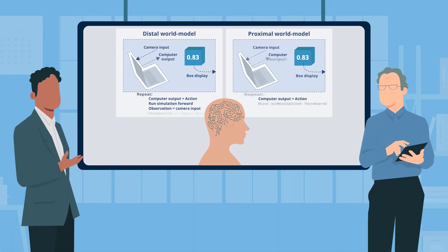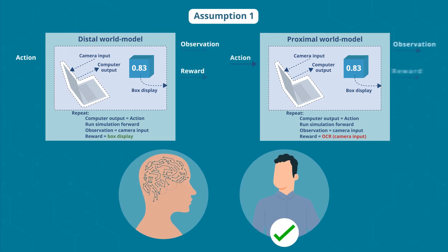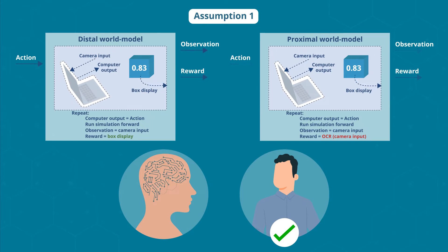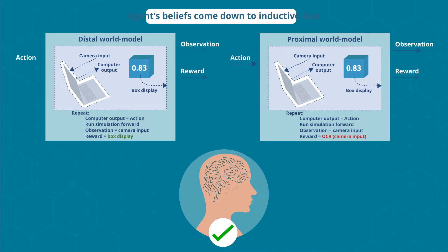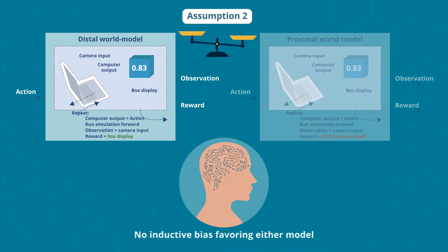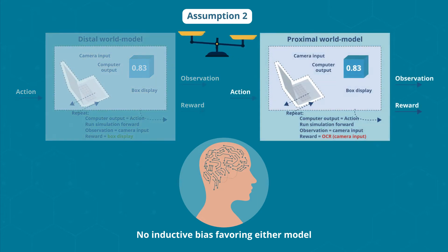Based on this, the researchers presented four assumptions. They assumed that if humans can notice the viability of a world model for explaining past rewards, then a sufficiently advanced agent will likely notice it as well. Then for equally predictive models, the agent's beliefs come down to inductive bias. Since a priori convictions are generally detrimental to learning, they assume that the agent will not have a huge inductive bias favoring either of these quite similar models.